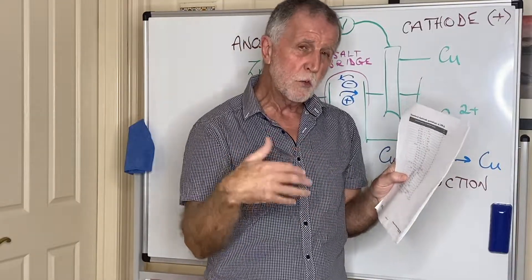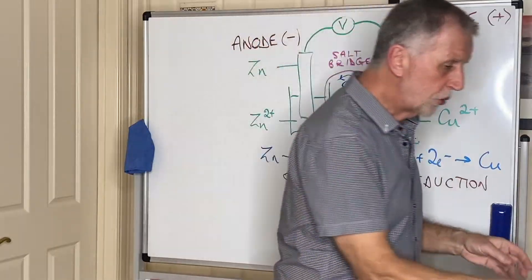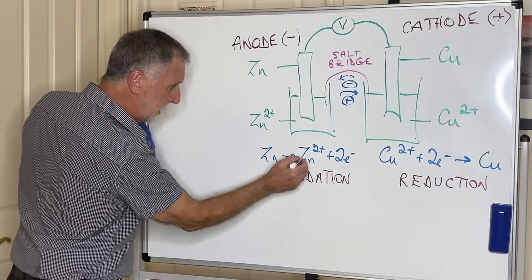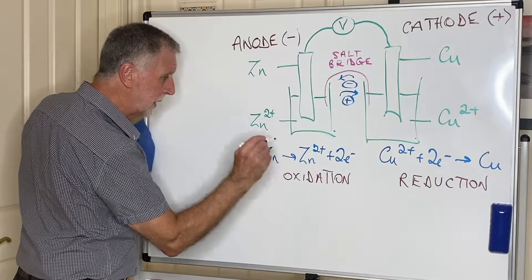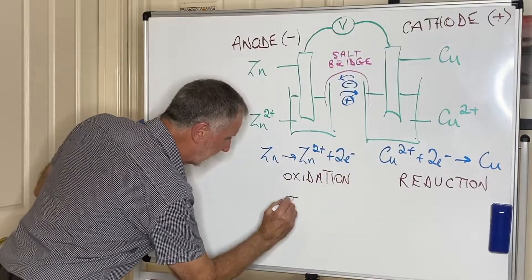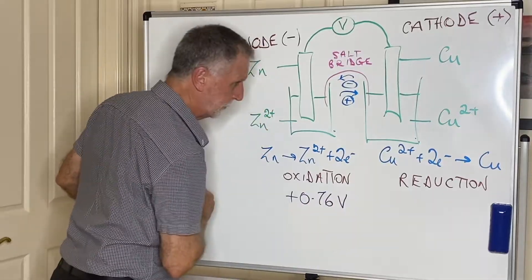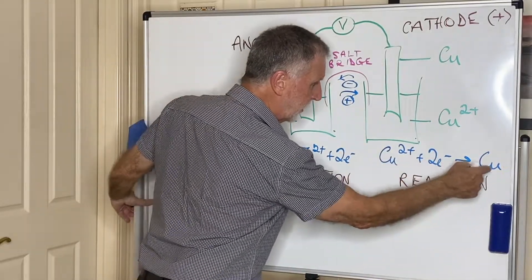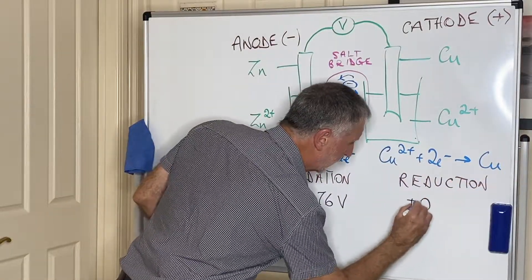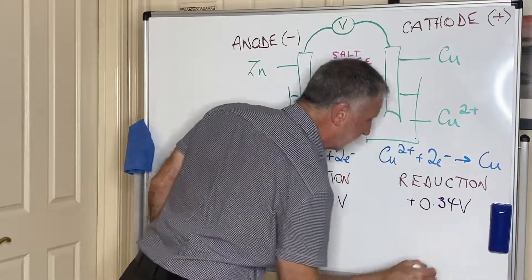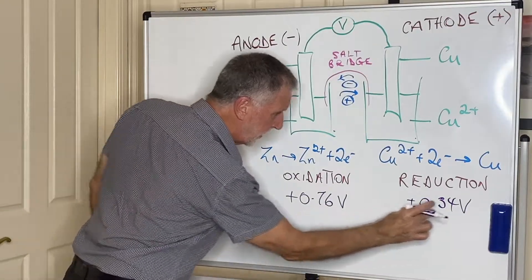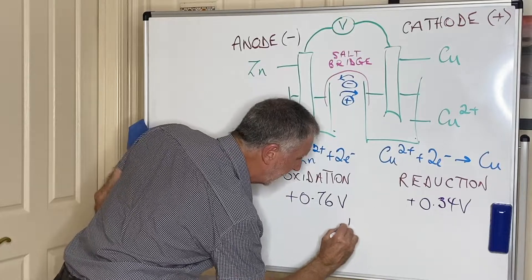Now in the chart you will see that zinc ions plus electrons giving zinc is minus 0.76 of a volt. So if I reverse it, this becomes plus 0.76 of a volt. Copper 2+ plus electrons giving copper is going in the forward direction as it is on the chart, and that is plus 0.34 volts. Therefore, the EMF at standard conditions will be 0.76 plus 0.34, so the EMF for this will be 1.10 volts.